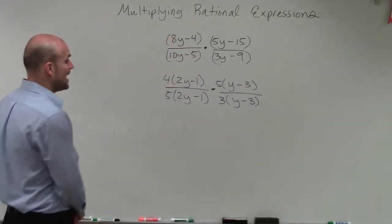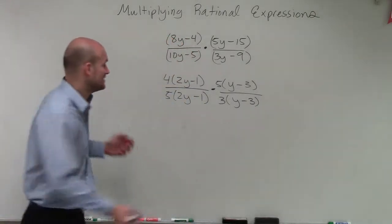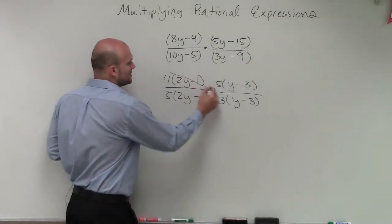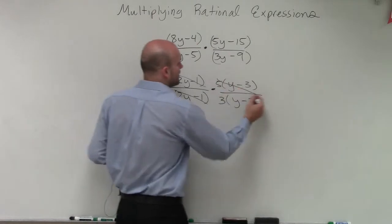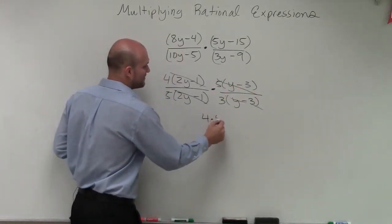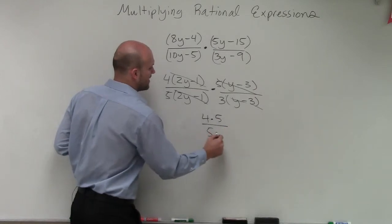Very interesting. So now what we see is I don't even have to multiply everything overall. I can actually get rid of these binomials, because these divide out to 1. These divide out to 1, so I'm just left with 4 times 5 over 5 times 3.